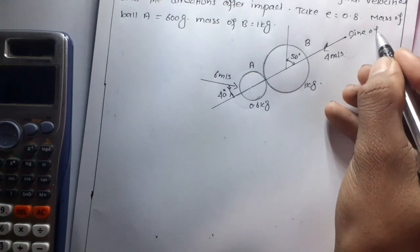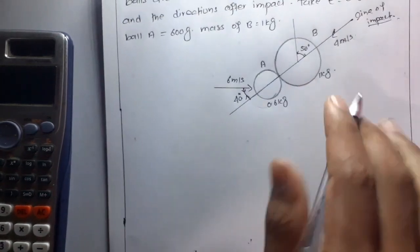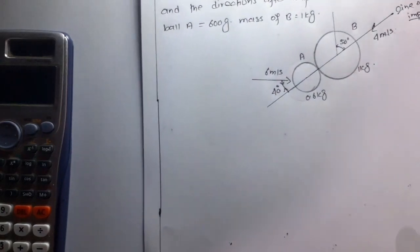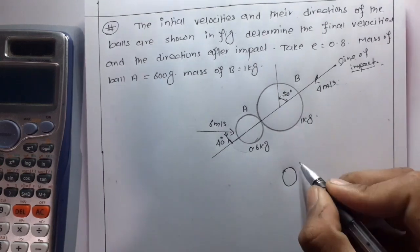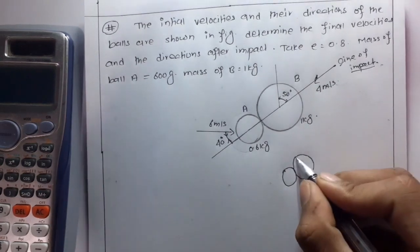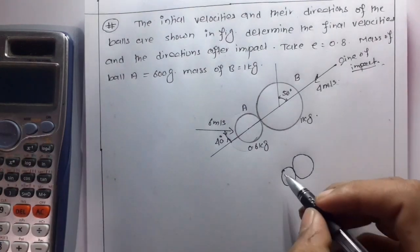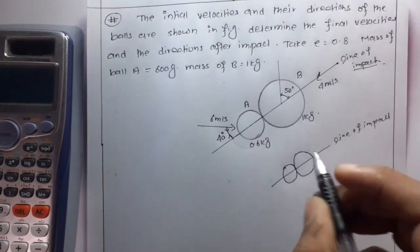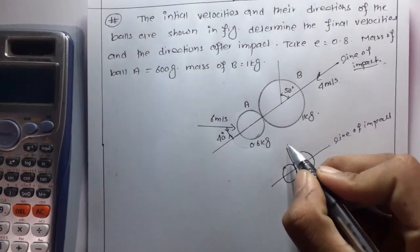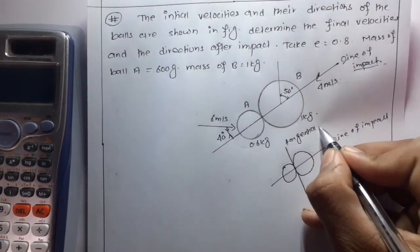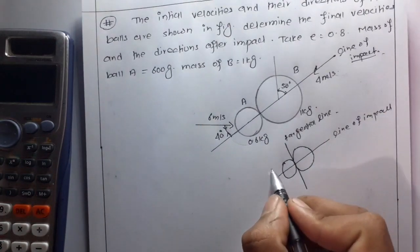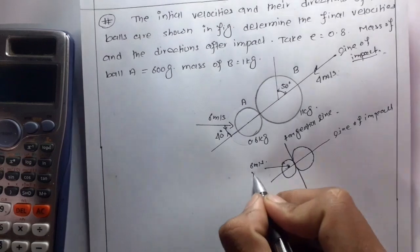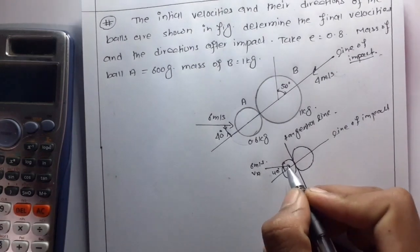Ball A has velocity VA = 6 m/s which makes an angle of 40 degrees with the line of impact. Ball B has velocity VB = 4 m/s along the line of impact. We draw the figure showing the tangential and normal components of the velocities, identifying the line of impact and tangential line.